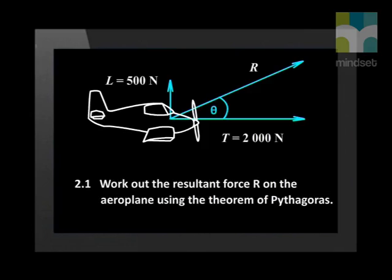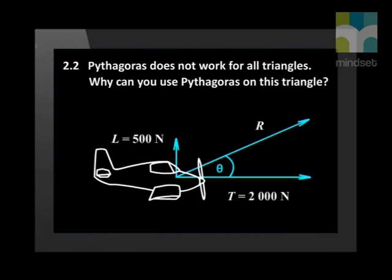Work out the resultant force R on the aeroplane using the theorem of Pythagoras. Pythagoras does not work for all triangles — why can you use Pythagoras on this triangle?